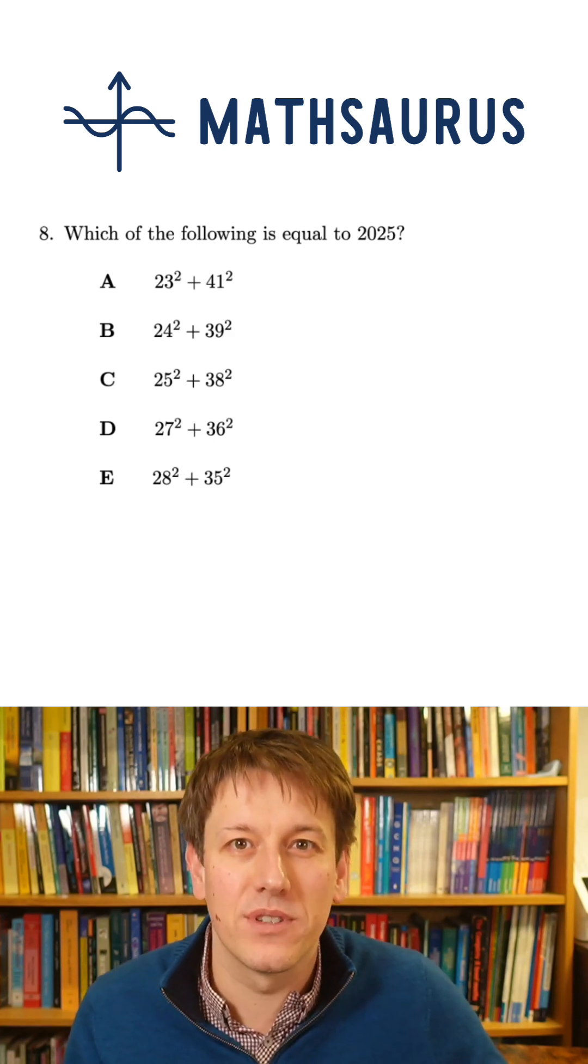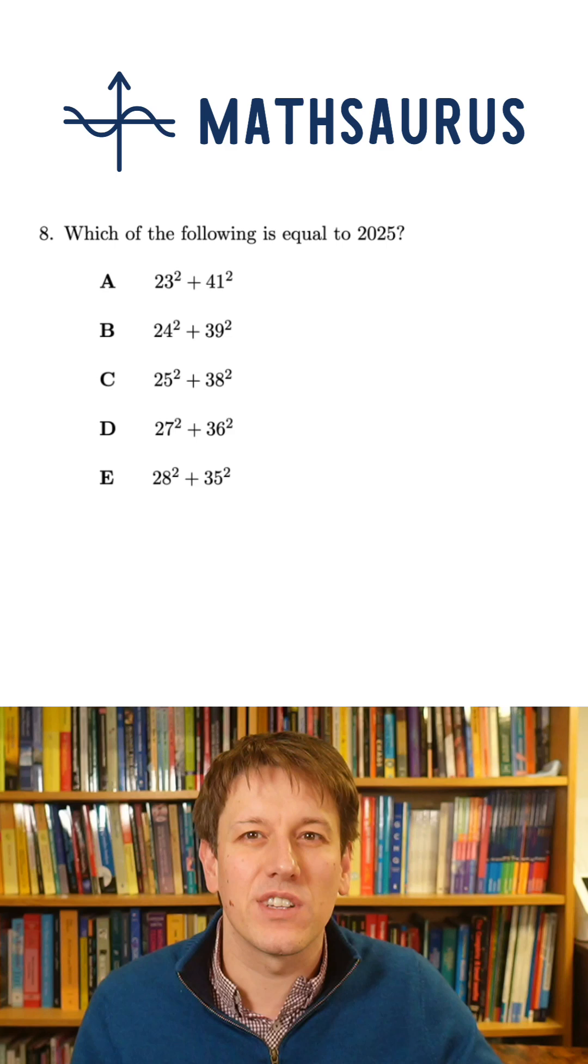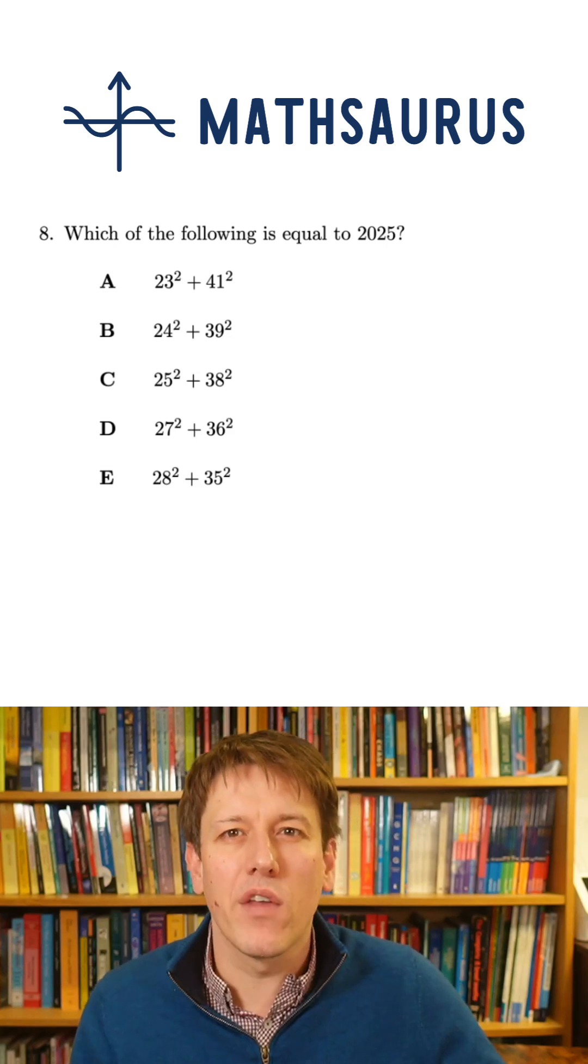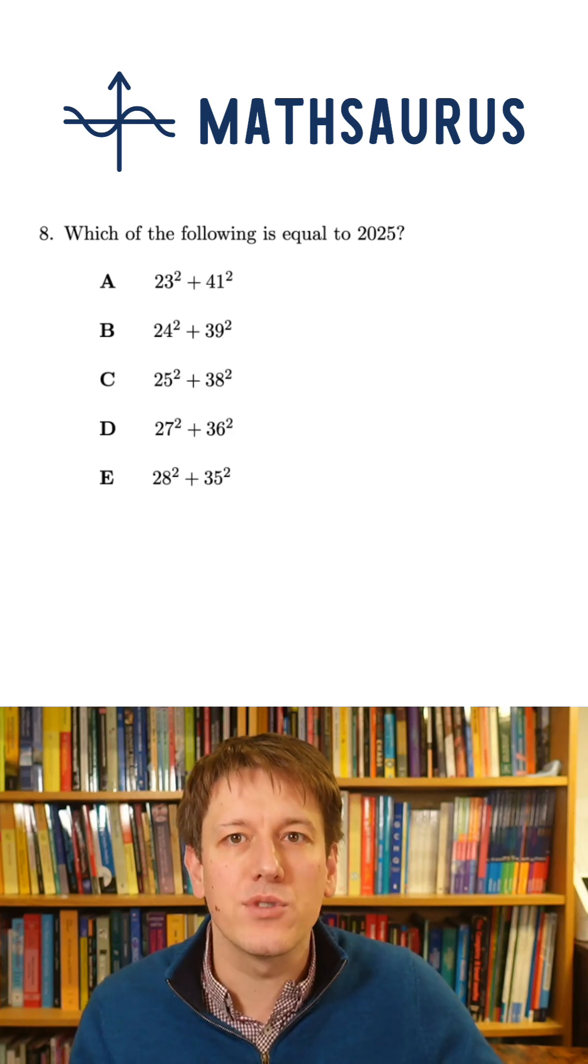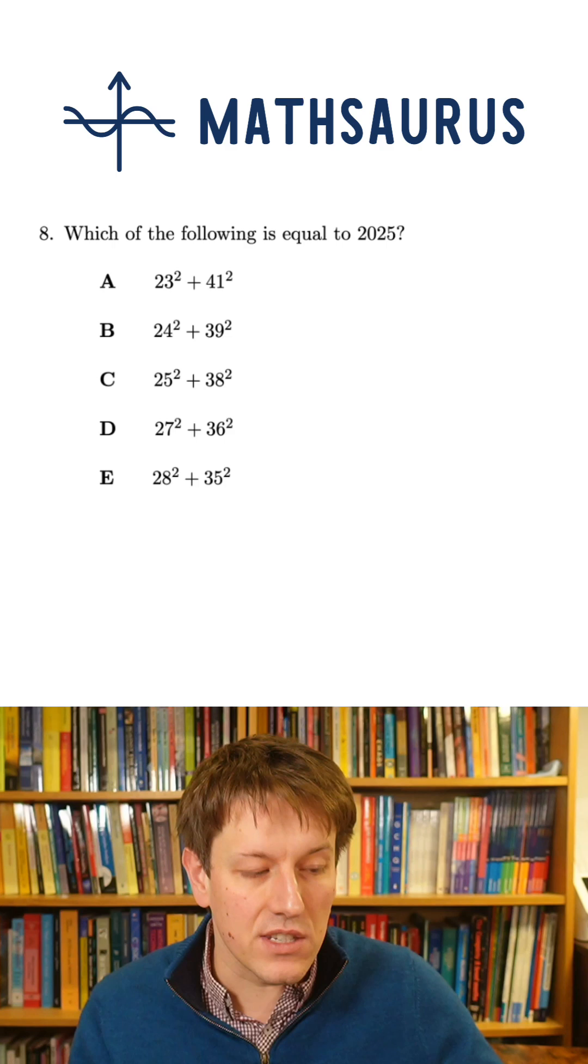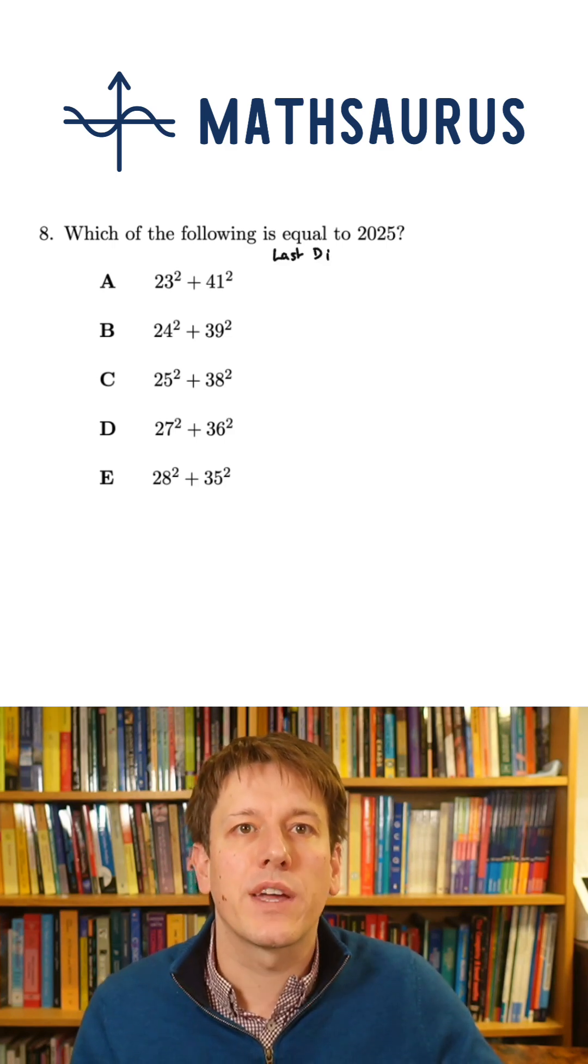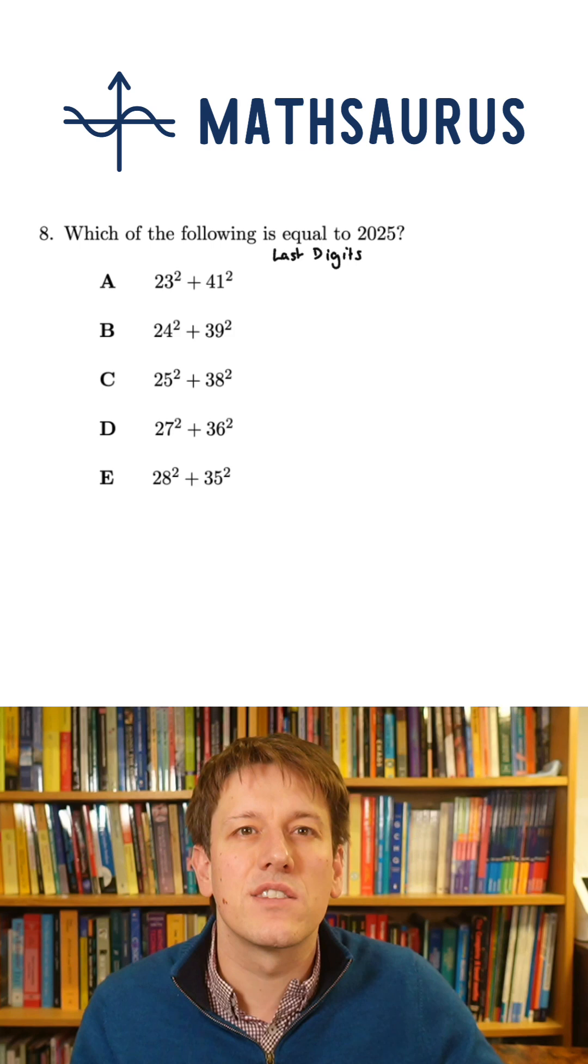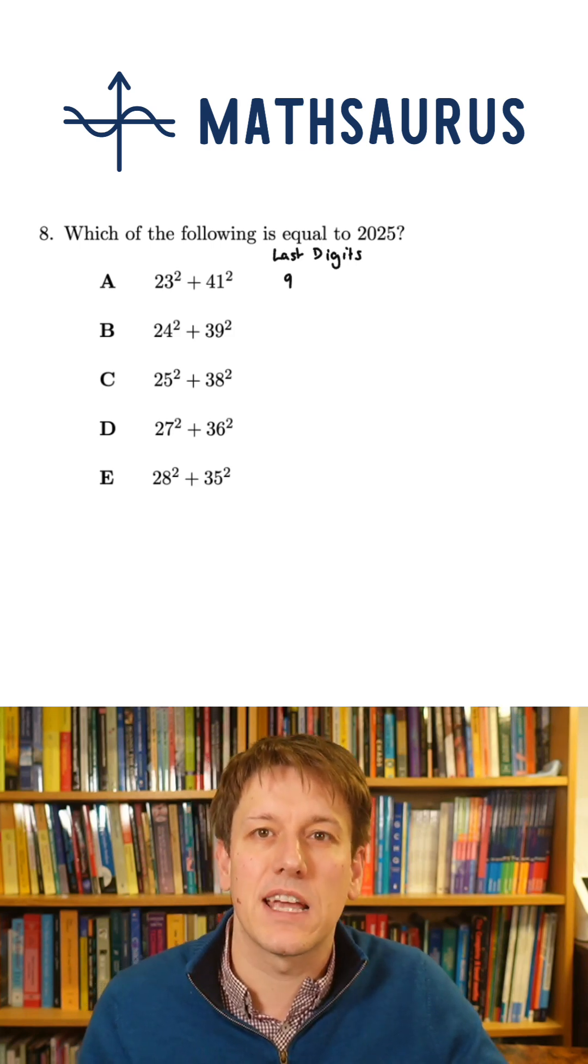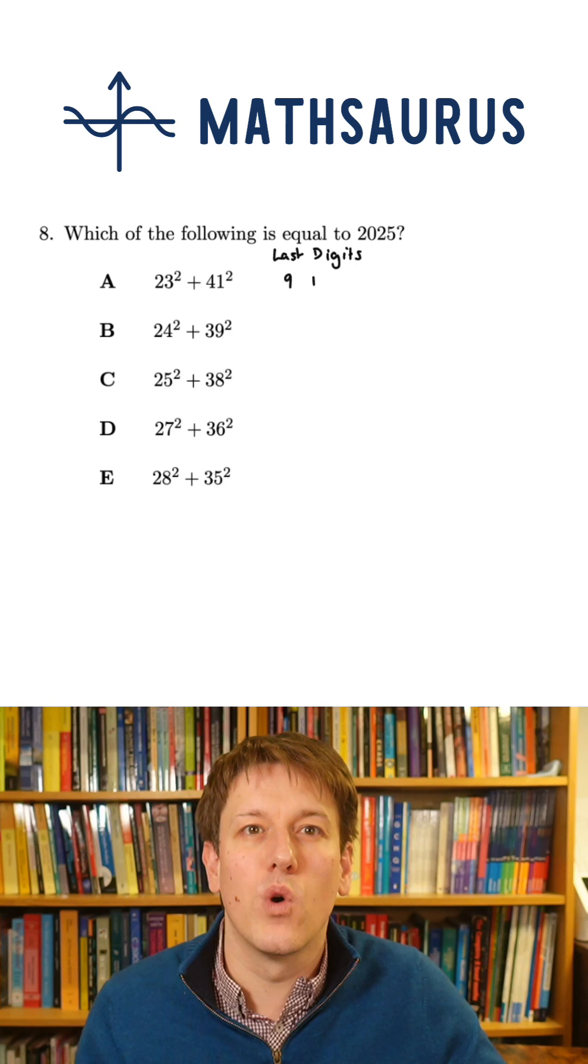Clearly, we're going to need to use the options to answer this question and to consider them one by one. But rather than actually working them all out, I'm going to just think about the last digits. We know the last digit of a product is the product of the last digits. So I can know that 23 squared has the same last digit as 3 times 3, so it's 9. 41 squared has the same last digit as 1 times 1, which is 1.